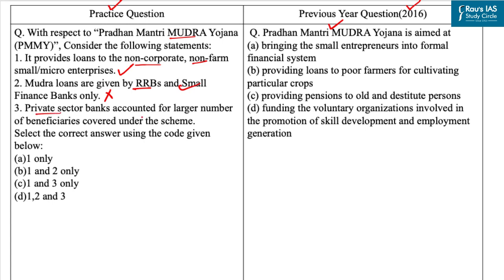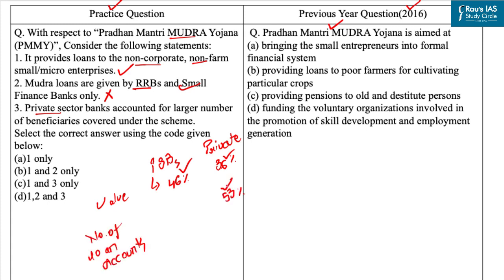The third statement: private sector banks accounted for a large number of beneficiaries covered under the scheme. According to the Department of Financial Services, in terms of value of loans disbursed, public sector banks accounted for almost 46% of total loans disbursed and private sector banks accounted for 36%. However, in number of loan accounts, private banks catered to 53% of total loan accounts while public banks accounted for 24%. This means private banks give smaller denomination loans but their coverage is much wider. So the third statement is correct — private sector banks accounted for a large number of beneficiaries. Our correct answer is Option C — 1 and 3 only. The answer to the previous year question is Option A. That's all for today — stay tuned for more such updates.